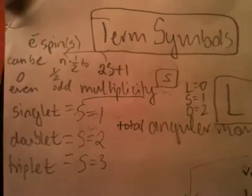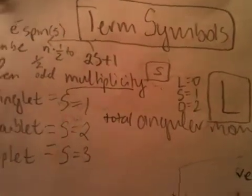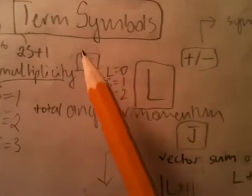Now, these electron spins refer to electrons in the valence shell. So, that's what this superscript S stands for, multiplicity.